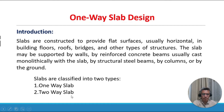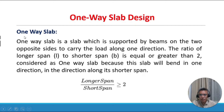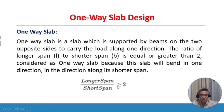Slabs are classified into two types: one-way slab and two-way slab. A one-way slab is supported by beams on two opposite sides to carry the load along one direction. The ratio of longer span L to shorter span B equal to or greater than two is considered a one-way slab, because this slab will bend in one direction — along its shorter span.